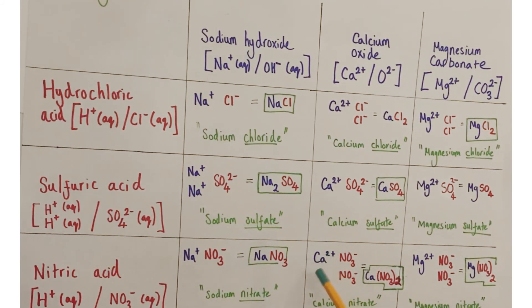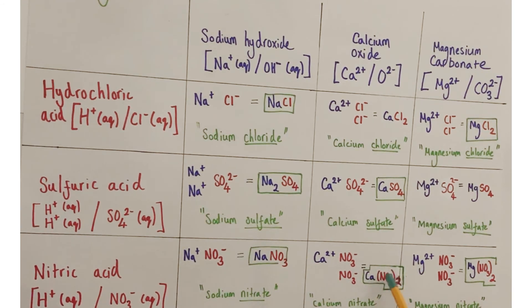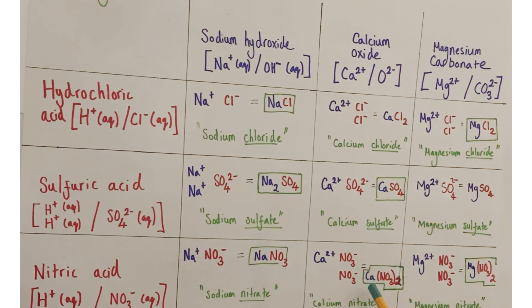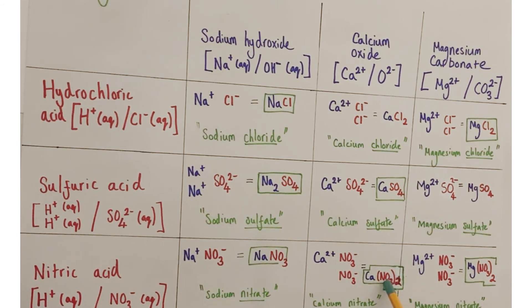Calcium (Ca²⁺, +2) requires two nitrate ions (each NO3⁻, −1) to cancel the charge, giving the formula Ca(NO3)2 — calcium nitrate. The bracket around NO3 is essential: without it, writing CaNO32 would imply one nitrogen and 32 oxygens rather than two nitrate ions. The subscript 2 must go outside the bracket to correctly indicate two nitrate groups.